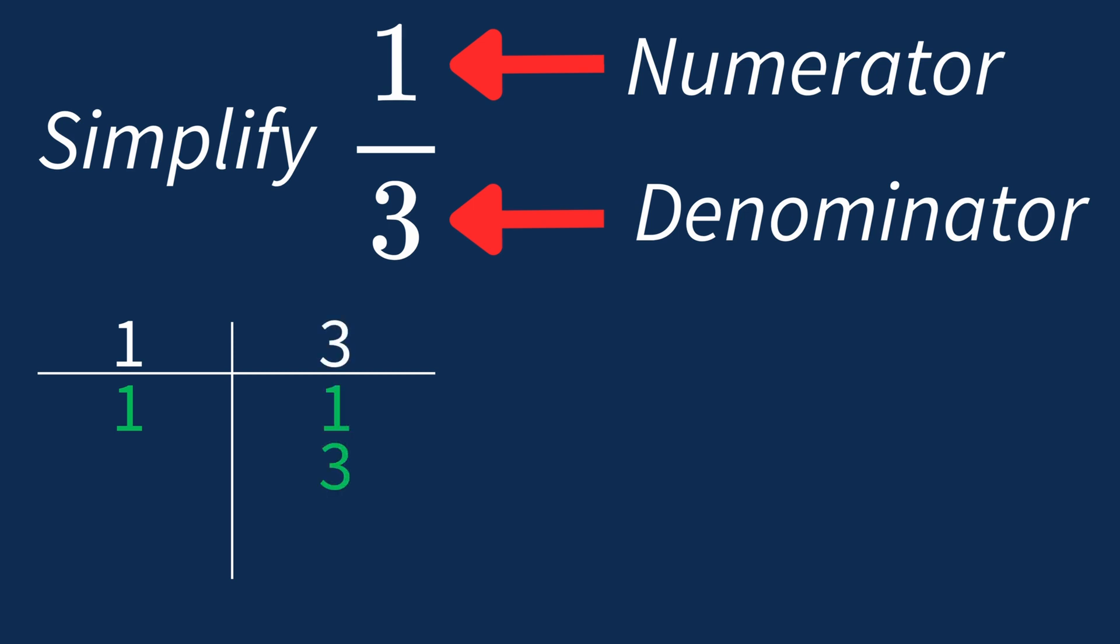So in this case, the only shared factor between 1 and 3 is 1. So we're going to divide the top and bottom by 1. Dividing the numerator 1 by 1 gives us 1. Then dividing the denominator 3 by 1 leaves us with 3.